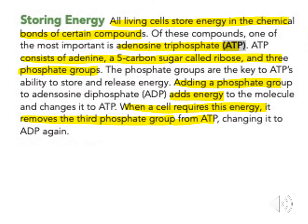Adding a phosphate group to adenosine diphosphate adds energy to the molecule and changes it to ATP. When a cell requires this energy, it removes the third phosphate group from ATP, changing it to ADP again.